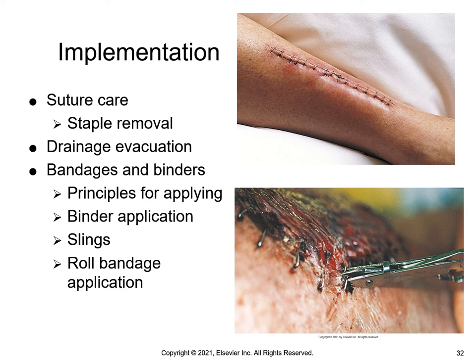Binders are bandages made of large pieces of material, routinely elastic or cotton, to fit a specific body part. The most common type is an abdominal binder, which supports large abdominal incisions vulnerable to tension or stress when the patient moves or coughs. Binders and bandages applied over dressings provide extra protection and therapeutic benefits by creating pressure over a body part, immobilizing a body part, supporting a wound, reducing or preventing edema, securing a splint, or securing dressings.